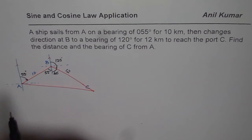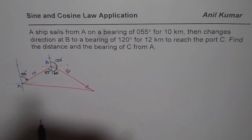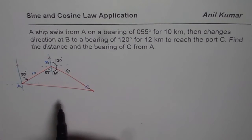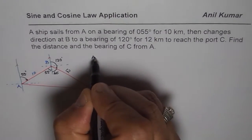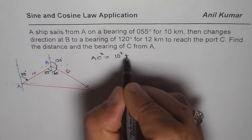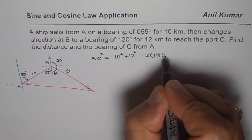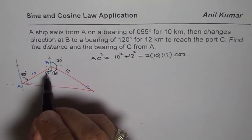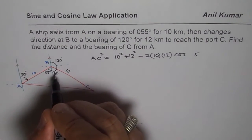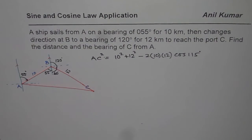So in this particular triangle, we know two sides and the angle included. That means we can apply the cosine law to find AC. Whenever we have two sides with the included angle, cosine law can be applied. So we get AC. We can write down AC square equals square of these two to be added. So we get 10 square plus 12 square minus 2 times 10 times 12 times cosine of angle between them, which is 60 plus 55. So the angle is 115 degrees.